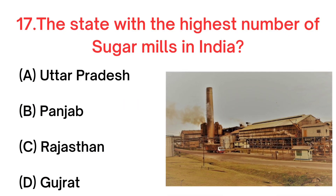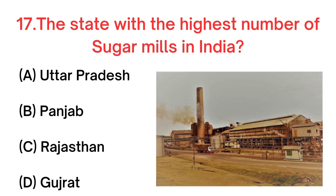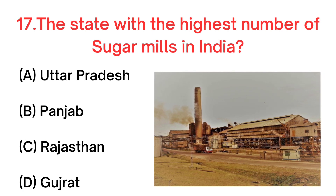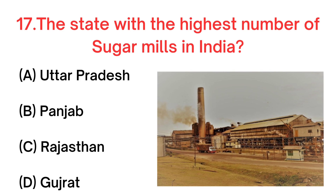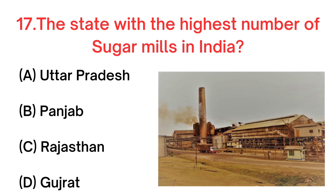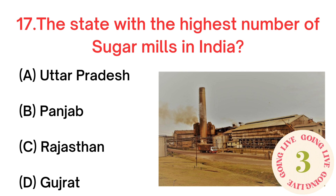Your next question. The state with the highest number of sugar mills in India? A. Uttar Pradesh. B. Punjab. C. Rajasthan. D. Gujarat. Your answer is A. Uttar Pradesh.